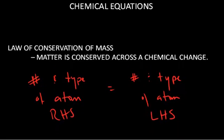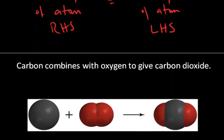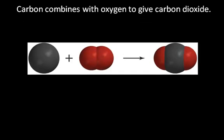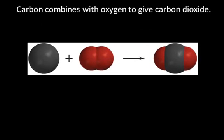Let's look at some examples. Carbon combines with oxygen to give carbon dioxide. In this case we can model using the space filling model to describe this particular chemical change. The black sphere is carbon and the red spheres are diatomic molecular elemental oxygen. And we see on the right hand side of the equation we have carbon dioxide.